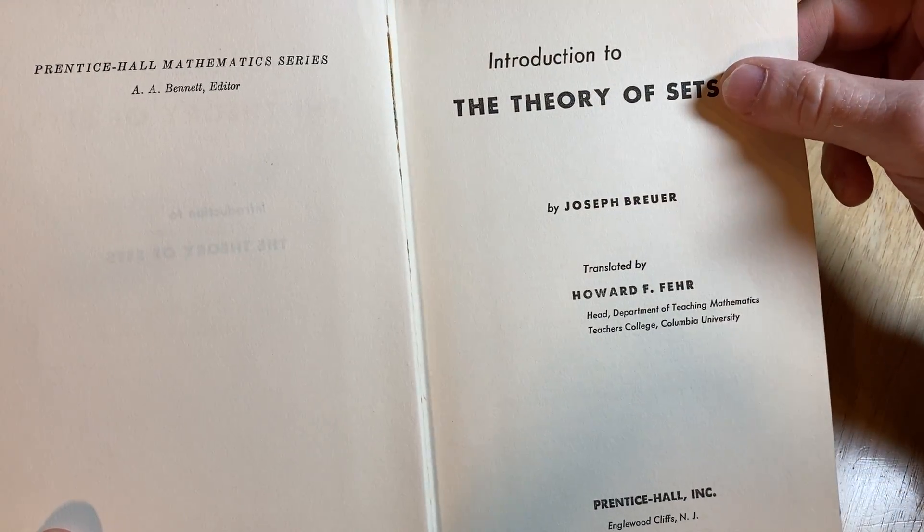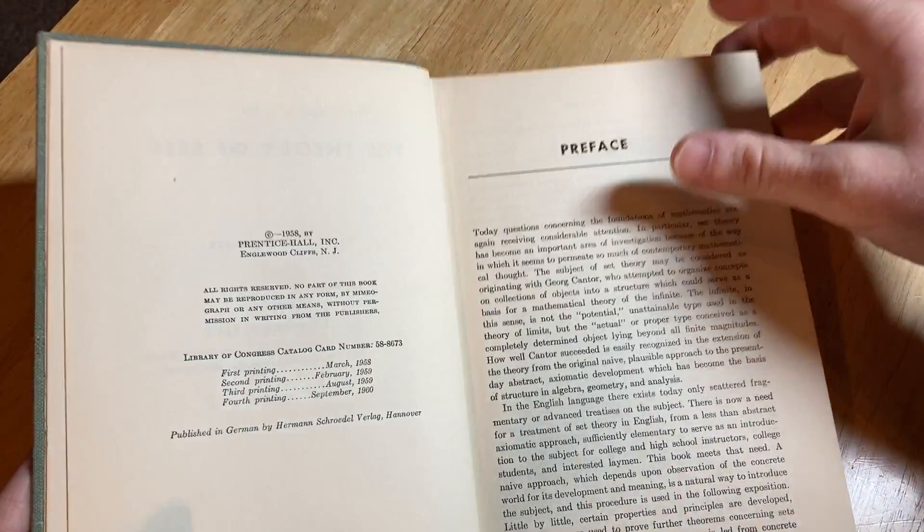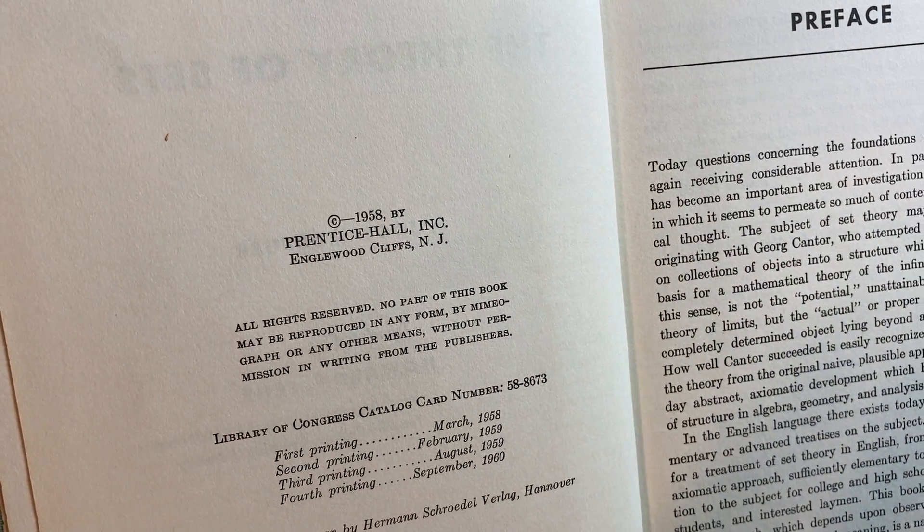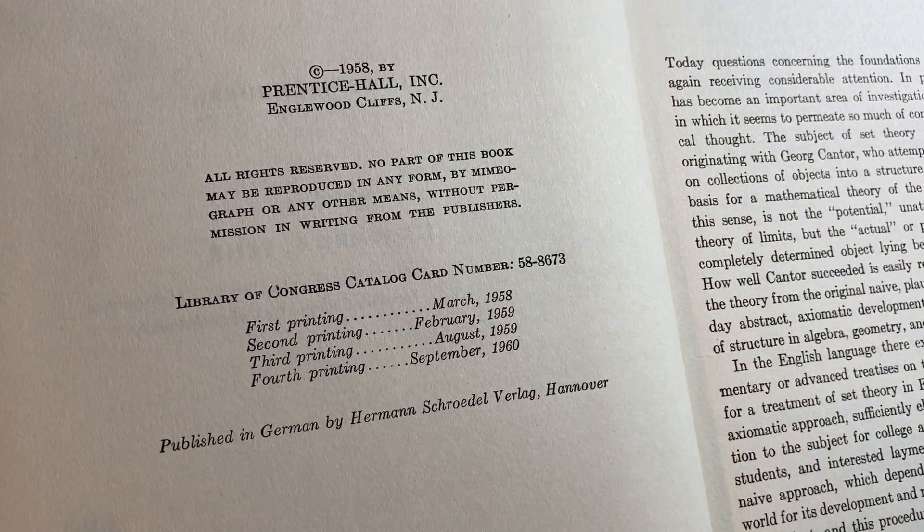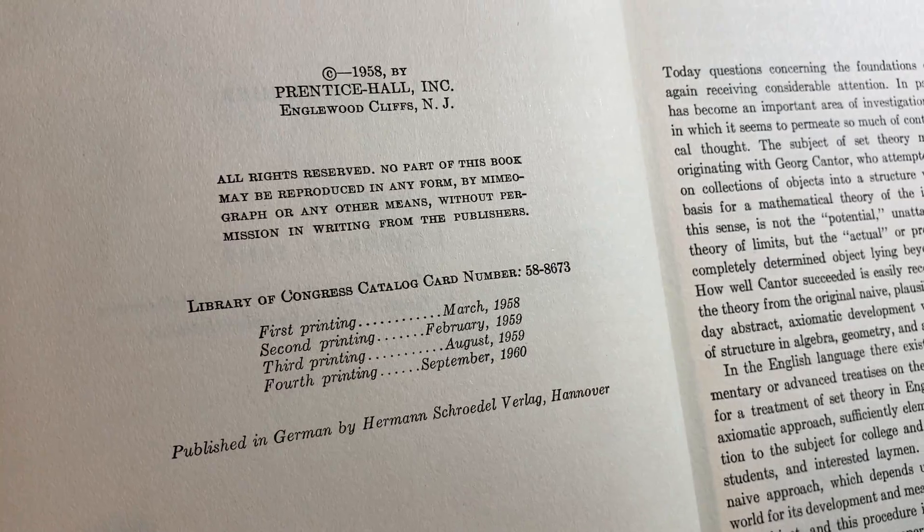Theory of Sets by Joseph Brewer. I've had this for a while. And my friend who gave me this book used this book. So 1958, wow. Wow, this is the fourth printing, so 1960, I think. Printed in German by Hermann Schrader-Lag Hanover.